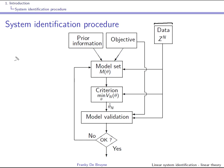Choosing a model set means selecting a structure — for instance ARX, output error, or another model — and also deciding how many parameters are in the A and B polynomials. The choice depends on information available upfront and on the objective: for prediction, ARX models are known to perform very well, whereas output error models are best used for simulation.